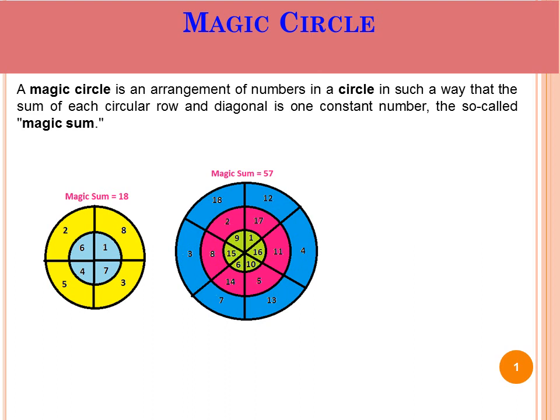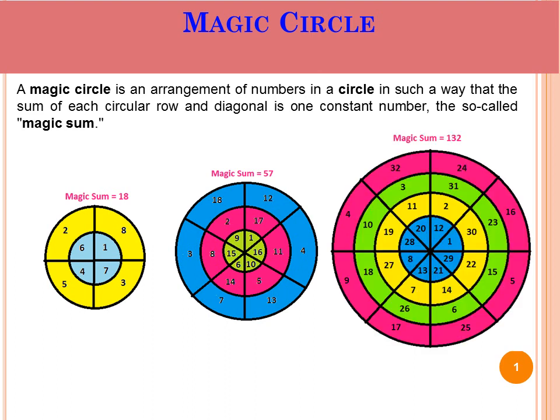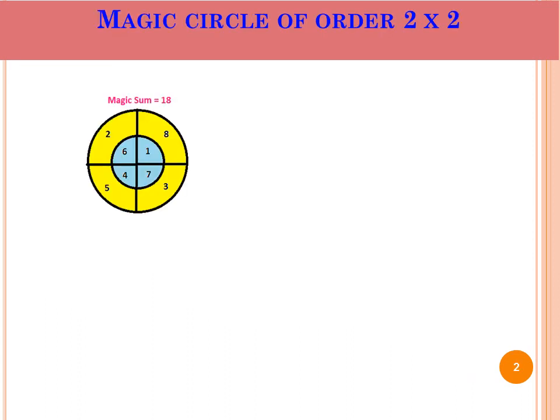The smallest one has magic sum 18, then 57, then 132 and then so on. Let me start from the smallest one. The 2 cross 2 magic circle has 2 circular rows and 2 diagonals. The inner circular row contains 1, 6, 4, and 7.